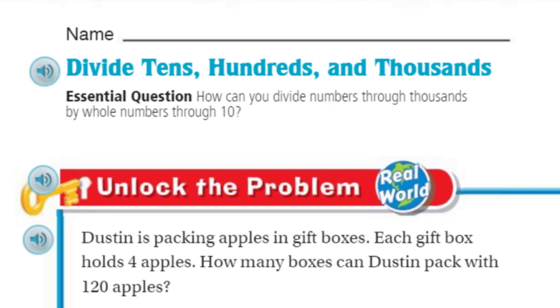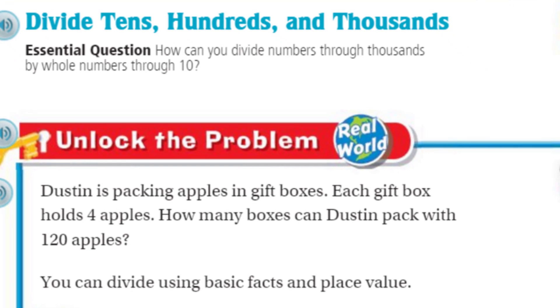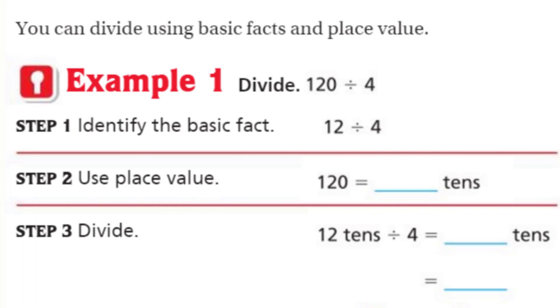We can't do anything unless we unlock the problem. That's right, my friends, because this is real world. It says Dustin is packing apples in gift boxes. Each gift box holds four apples. How many boxes can Dustin pack with 120 apples? It says you can divide using basic facts and place value. Let's see.